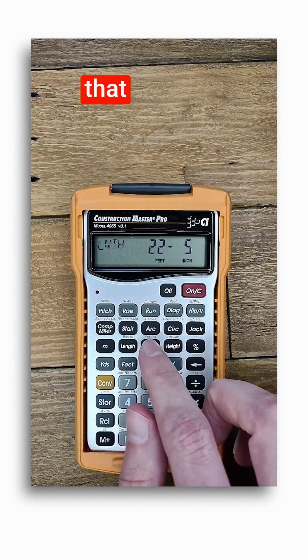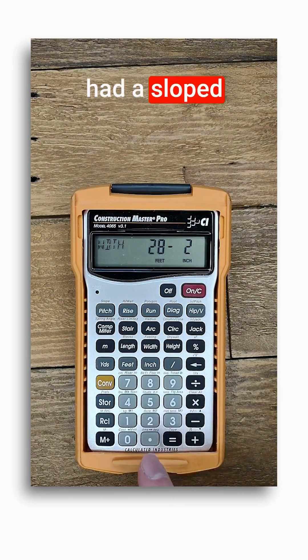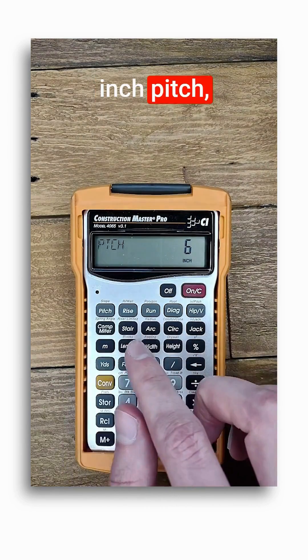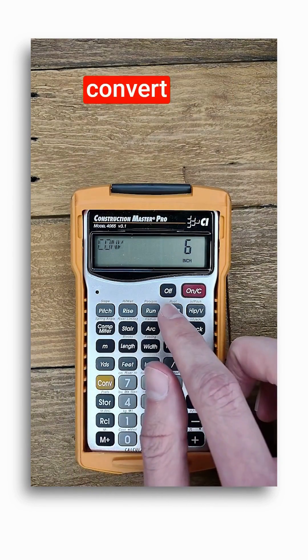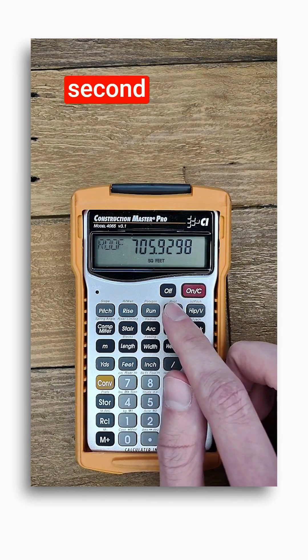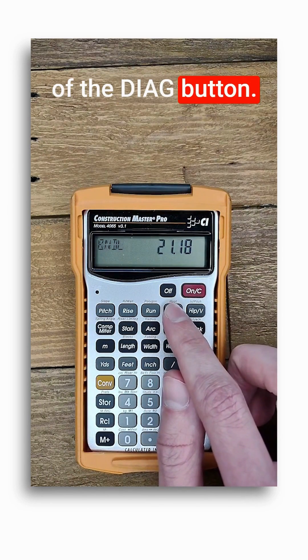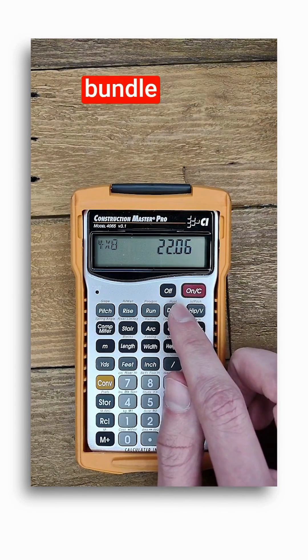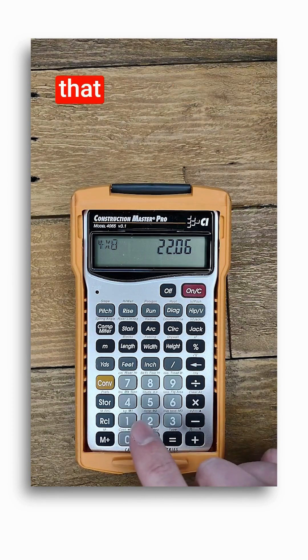Now if this length and width that I already entered for drywall had a sloped roof over it, I could enter the pitch, let's say a 6 inch pitch, and then push convert roof, which is the second function of the diag button. I'd keep pushing roof for the number of squares, bundles, bundle sizes, and 4 by 8 boards that I would need.